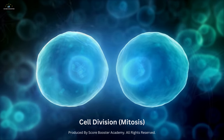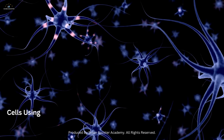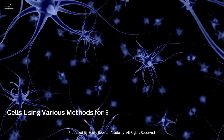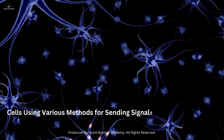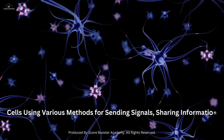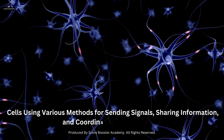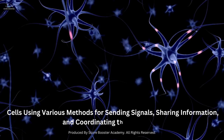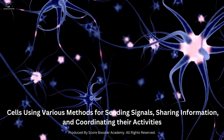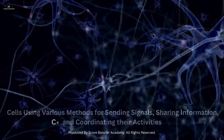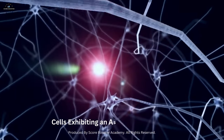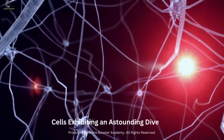You might be wondering: do cells communicate with each other? They sure do. Cells use various methods to send signals, share information, and coordinate their activities. It's like a busy city with cells buzzing around, exchanging messages, and working together to keep the organism in harmony. Cells also exhibit an astounding diversity, tailored to meet the specific needs of different organisms.